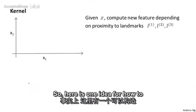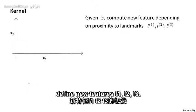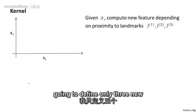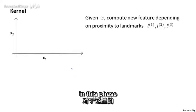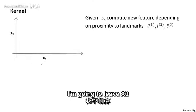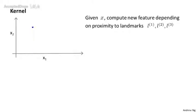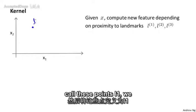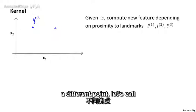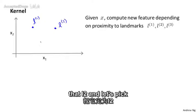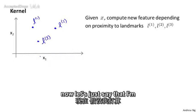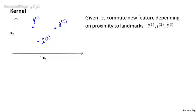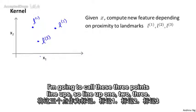Here's one idea for how to define new features f one, f two, f three. On this slide, I'm going to define only three new features, but for real problems we're going to define a much larger number. In this space of features x one, x two — leaving out the intercept term x zero — I'm going to manually pick a few points. I'm going to call this point l one, this one l two, and this one l three. I'm going to call these three points landmarks.